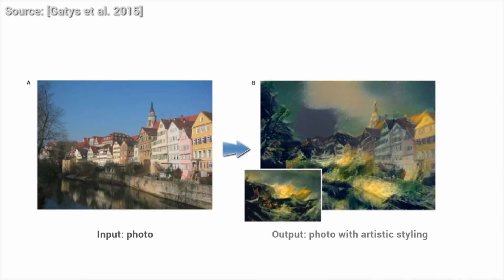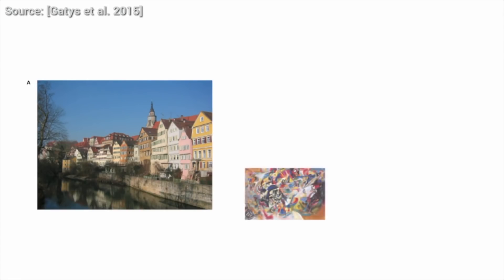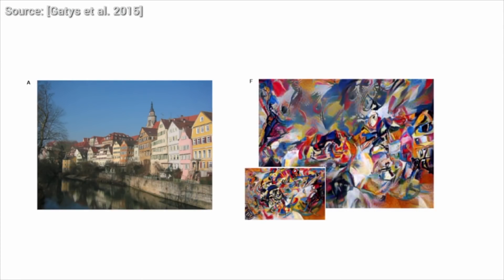Do you remember style transfer? Style transfer is a mostly AI-based technique where we take a photograph, put a painting next to it, and it applies the style of the painting to our photo.